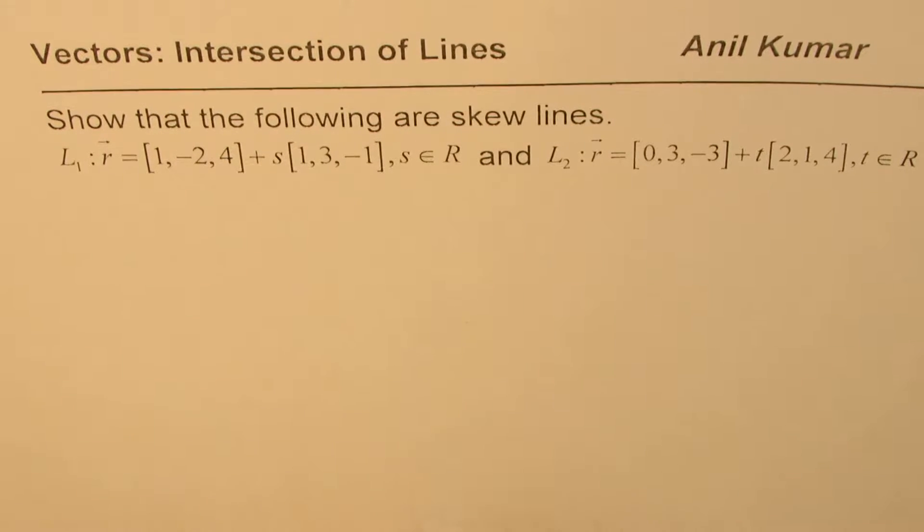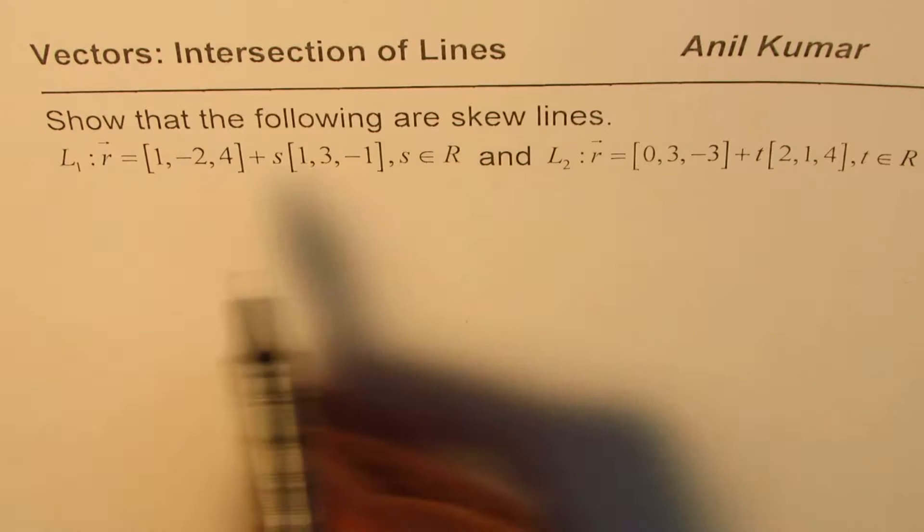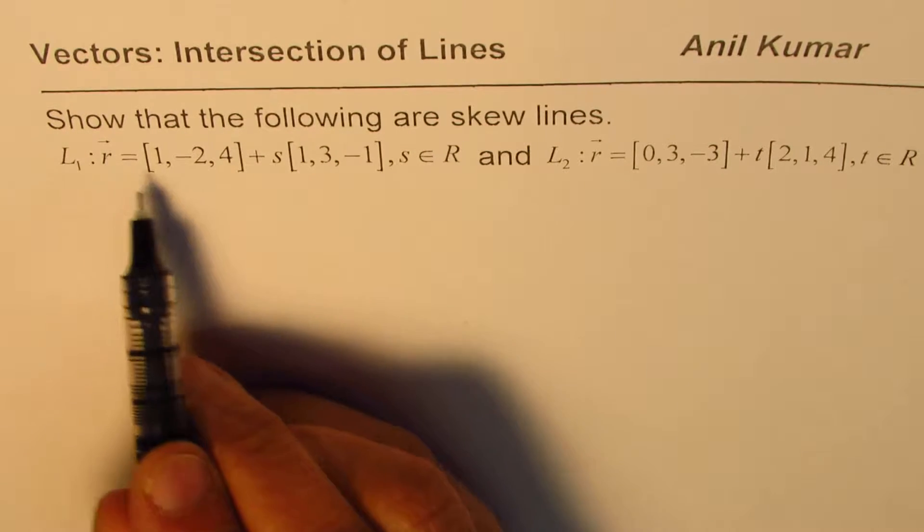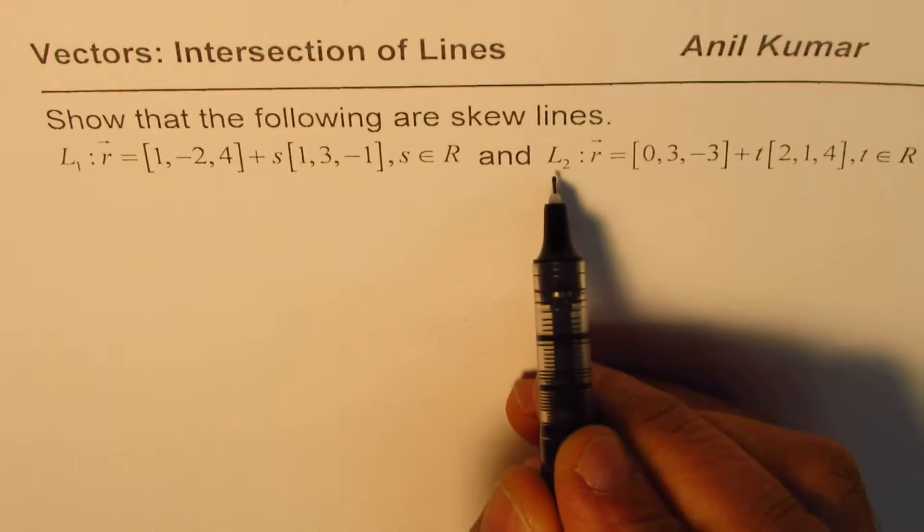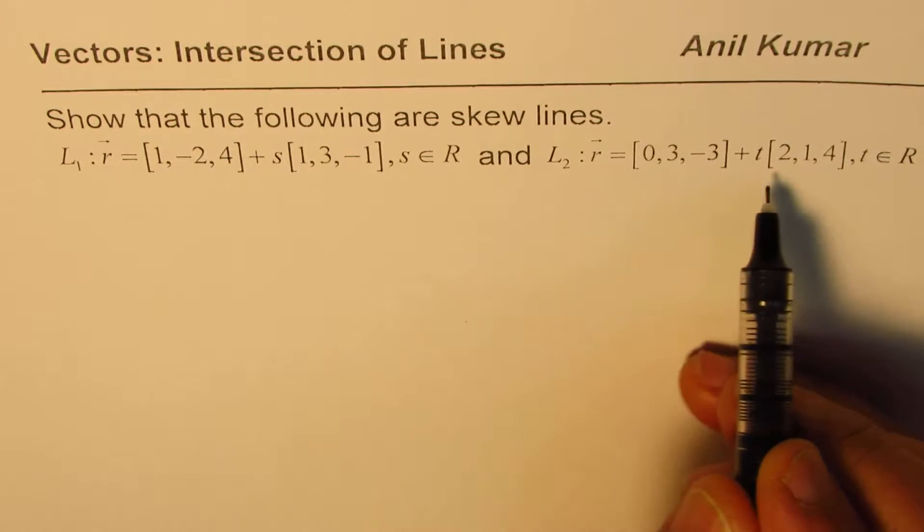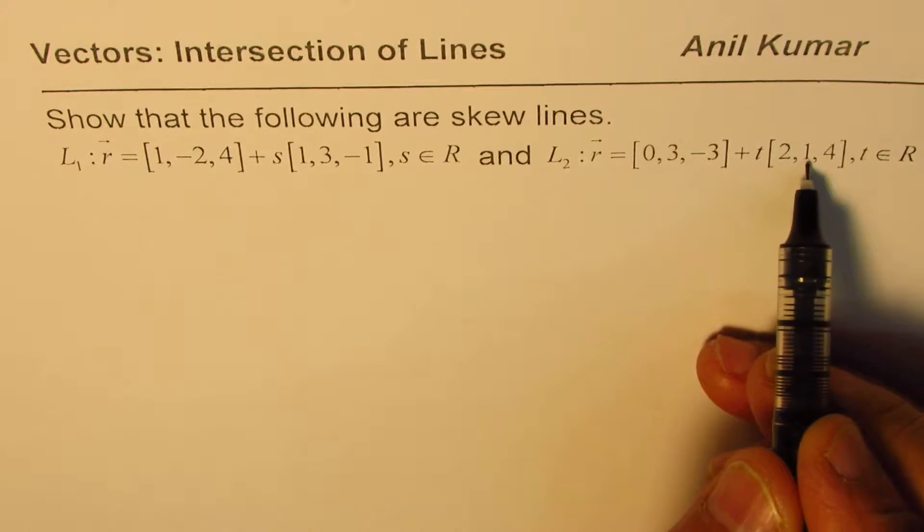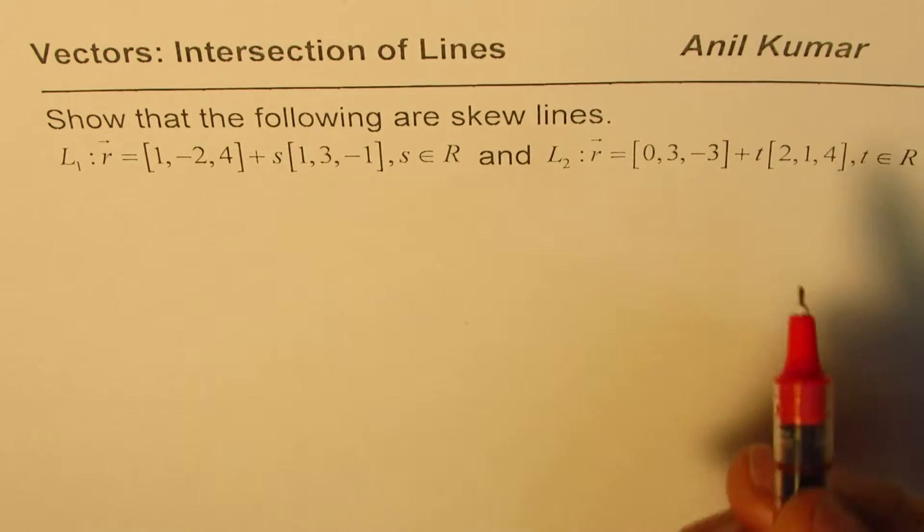Let's look into this question. Show that the following are skew lines: L1 is r equals 1 minus 2, 4 plus s times 1, 3, minus 1, s belongs to real numbers. Line 2 is 0, 3, minus 3, that's the position vector plus parameter t times 2, 1, 4 where t belongs to real numbers.